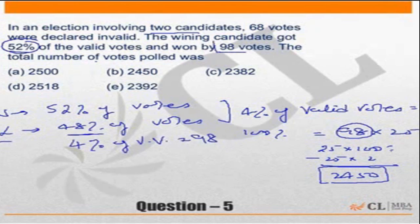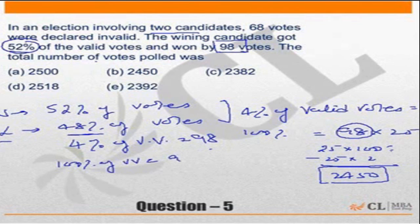Since the winning candidate got 98 votes more than the losing candidate, that means 4 percent of valid votes is equal to 98. Therefore, 100 percent of valid votes is equal to 98 into 25, which is 2450.